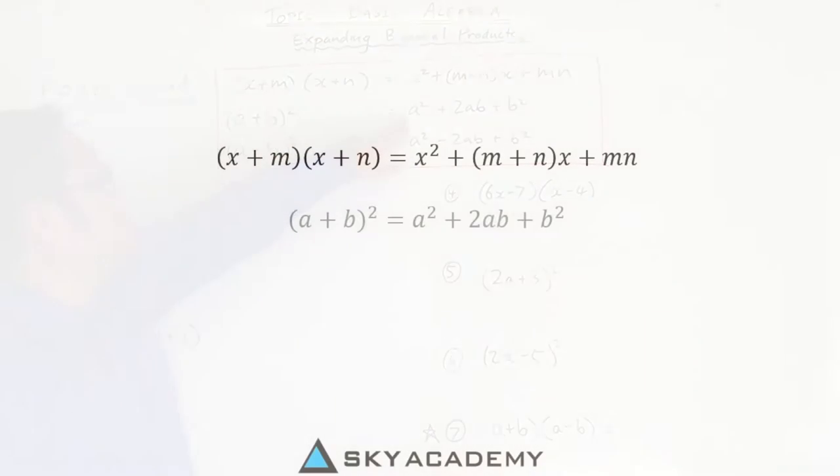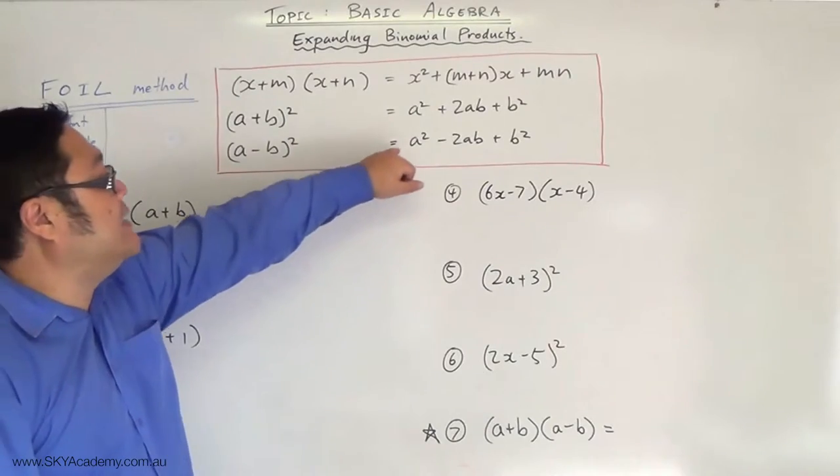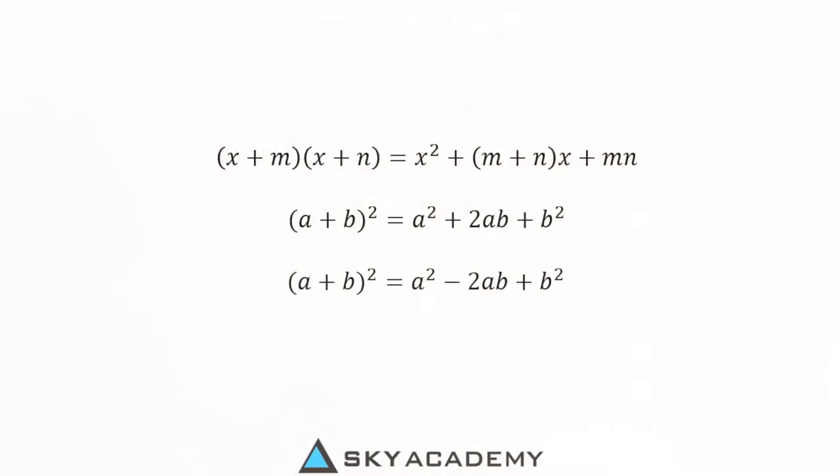(a+b)² is a² + 2ab + b², and (a-b)² is a² - 2ab + b².